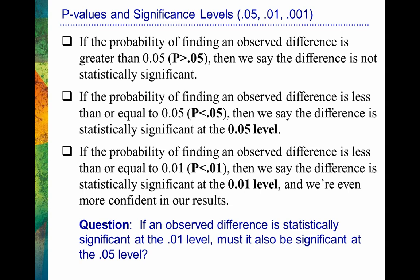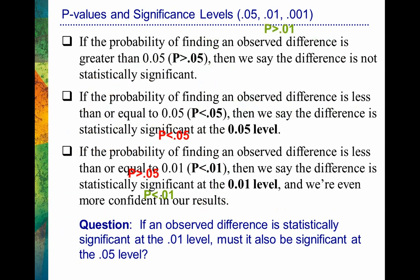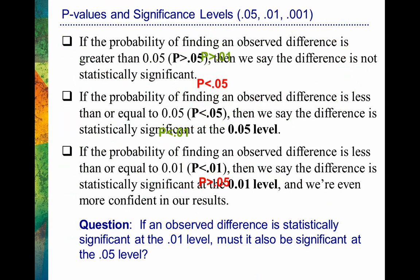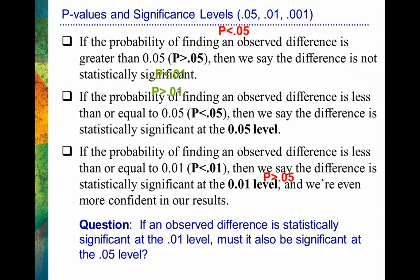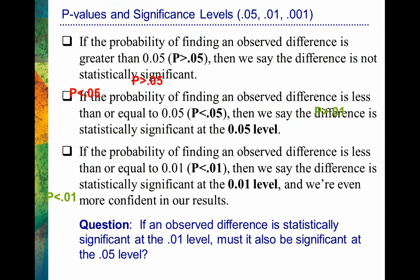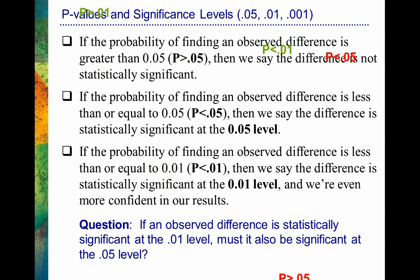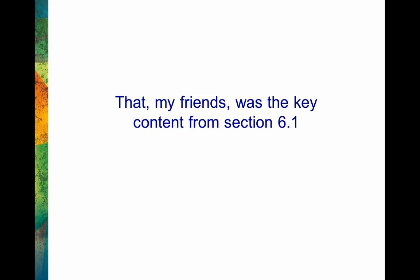I can tell that this can get confusing. You've got these 0.05s and 0.01s spinning around, and p greater than and p less than — it does get confusing. But we're just easing into it at this point. I want to make sure that you take appropriate time to look over this particular section. Because if you understand the basic logic of ruling out chance, and how probability is linked to making decisions about statistically significant results, then you'll better understand when we really start getting into computing probability and statistically significant results using actual calculations and formulas. So be sure to spend some time on this so it becomes a little bit more clear. That, my friends, is the key content from chapter 6, section 1.